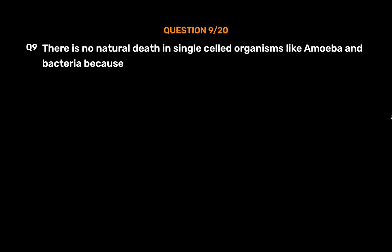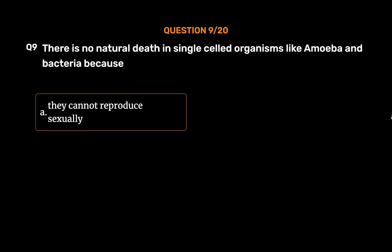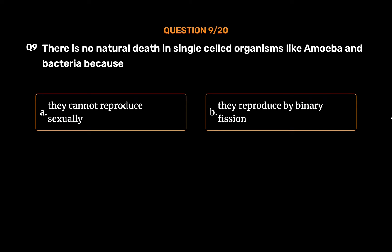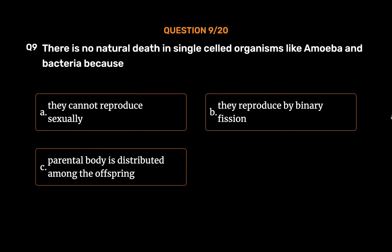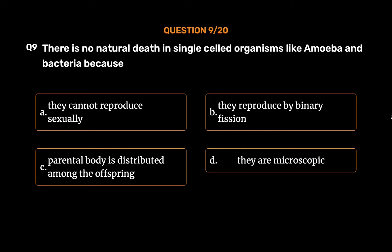Question No. 9: There is no natural death in single-celled organisms like amoeba and bacteria because. Option A: They cannot reproduce sexually. Option B: They reproduce by binary fission. Option C: Parental body is distributed among the offspring. Option D: They are microscopic.